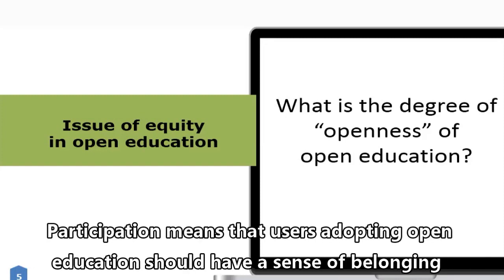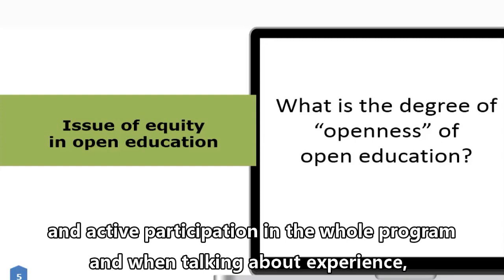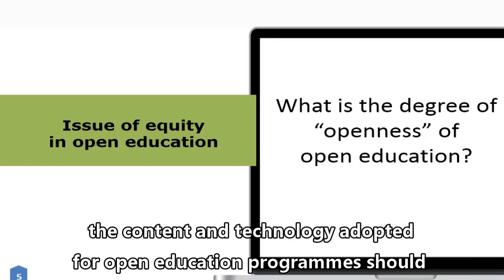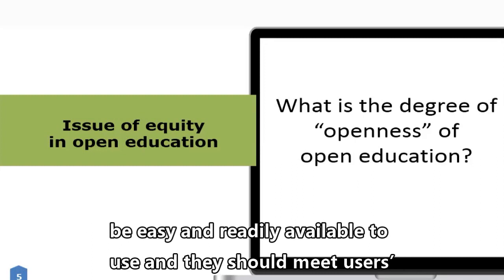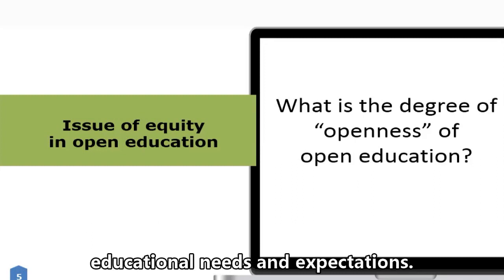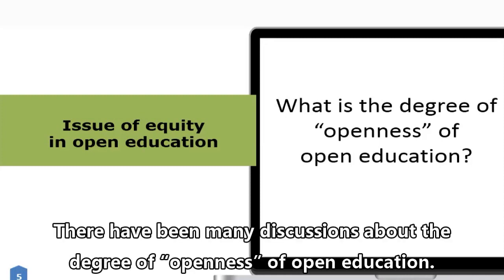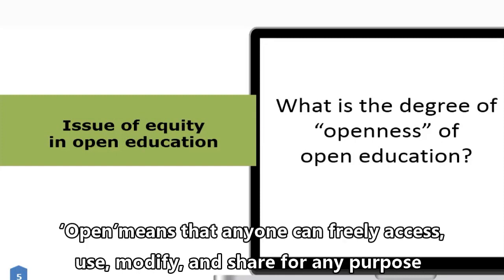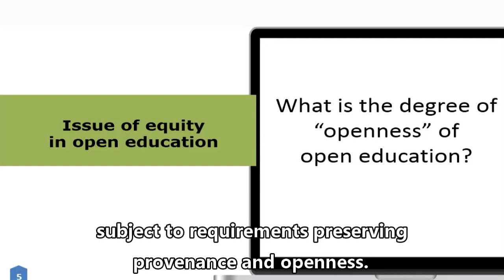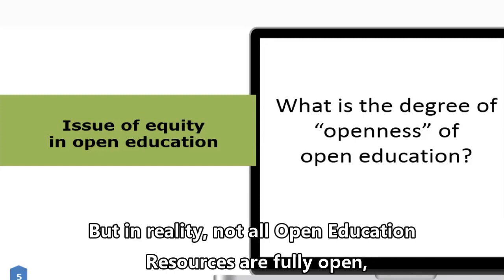Participation means that users adopting open education should have a sense of belonging and active participation in the whole program. When talking about experience, the content and technology adopted for open education programs should be easy and readily available to use, and they should meet users' educational needs and expectations. There have been many discussions about the degree of openness of open education. Open means that anyone can freely access, use, modify, and share for any purpose, subject to requirements preserving provenance and openness.